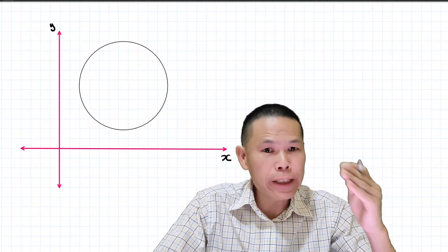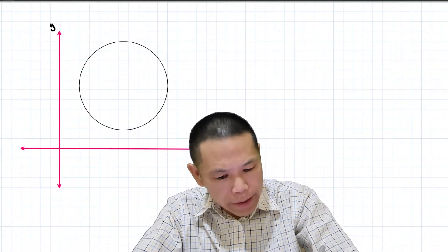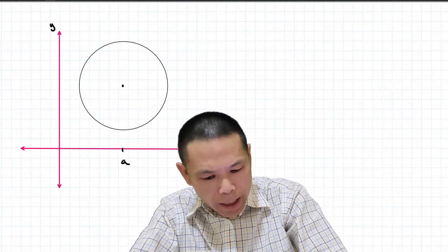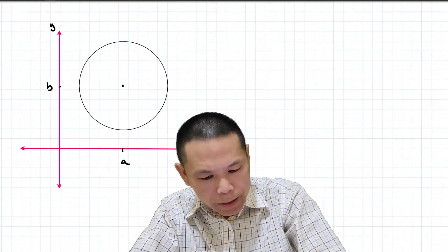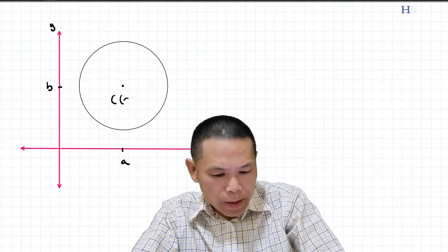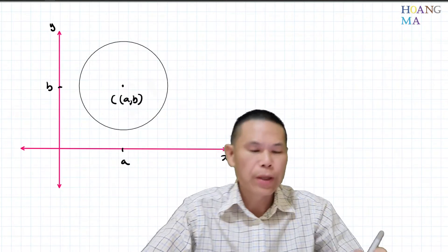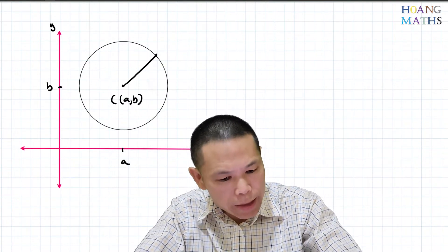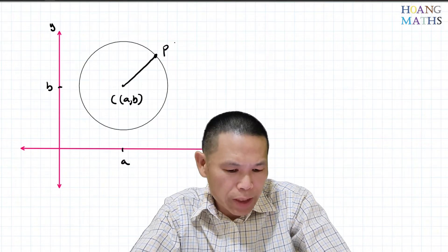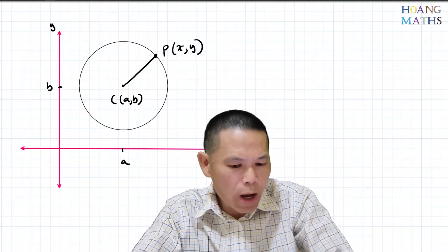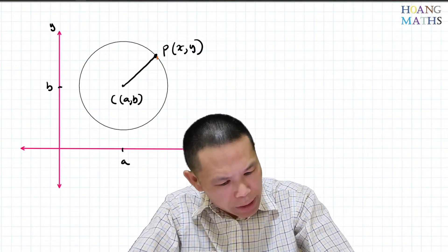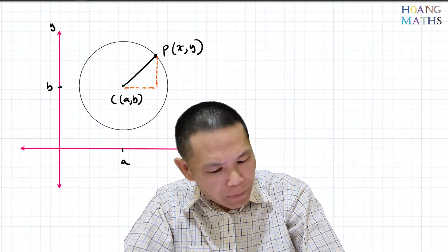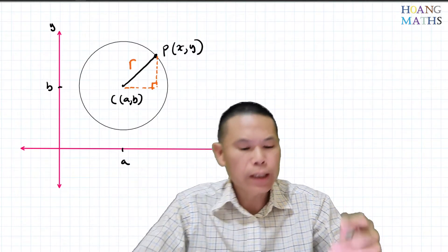Let's say the center is here — the x value is a and the y value is b, so the center of this circle is (a, b). From the center to a point on the circle is the radius. This point here is a variable point (x, y). If we connect these together to form a right-angle triangle, we have a right angle here and this is the radius.